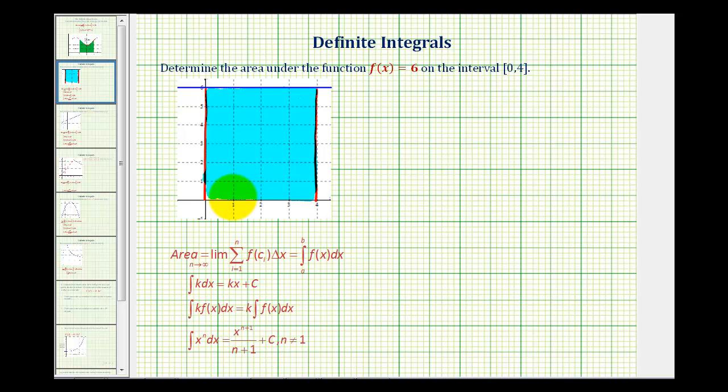Well because this shaded region is a rectangle, we could just use the area formula for a rectangle where the area is equal to length times width. So for this rectangle the length here would be six, and the width would be four, and six times four is equal to 24 square units.